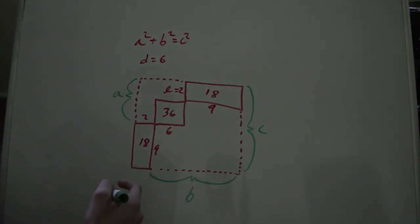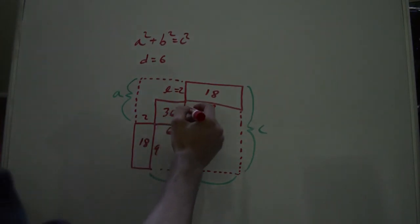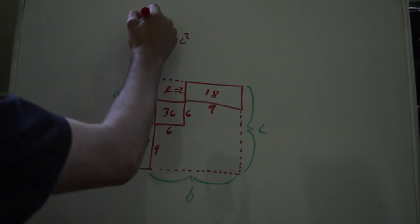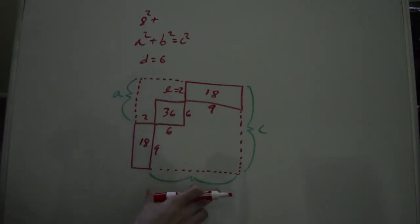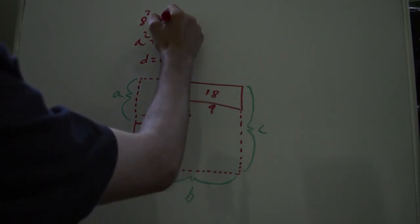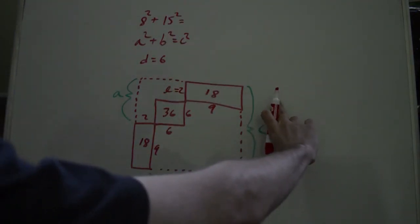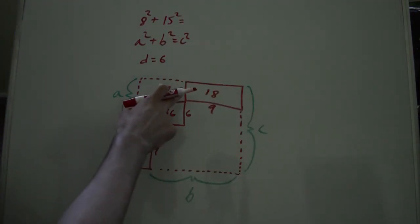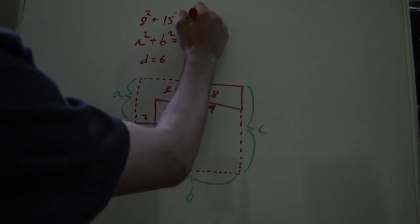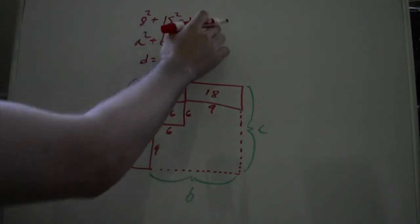So in this case, a would be equal to 6 plus 2, so a is 8. B is going to be equal to 6 plus 9, so 15. And then c is going to be all of these added up, so 2 plus 6 plus 9. So 8 plus 9 is 17. And you can plug that in and it'll work.